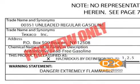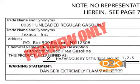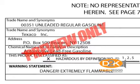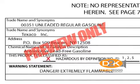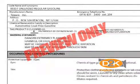We've selected unleaded regular gasoline, which is the trade name of the chemical. The MSDS lists the manufacturer's name, emergency telephone number, and address. The chemical name is automotive lead-free gasoline. This product is classified as hazardous. The warning statement reads: Danger.